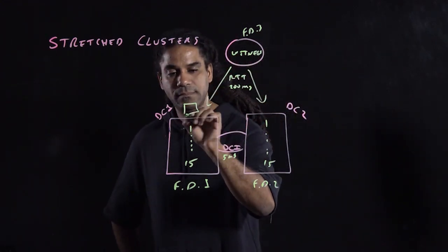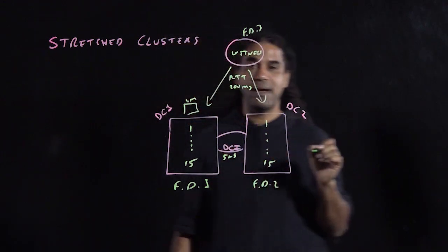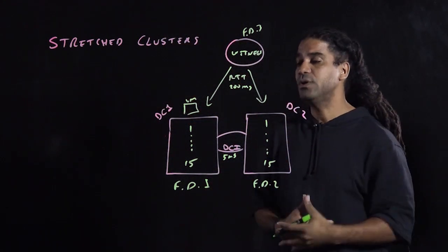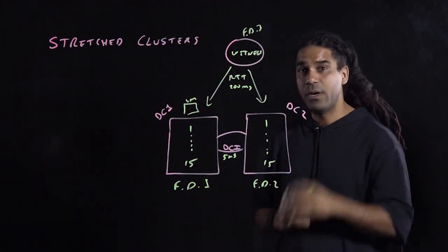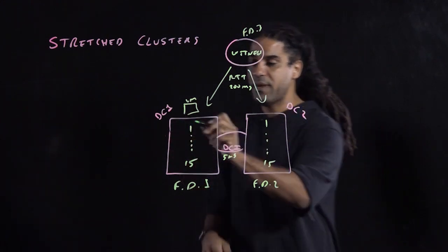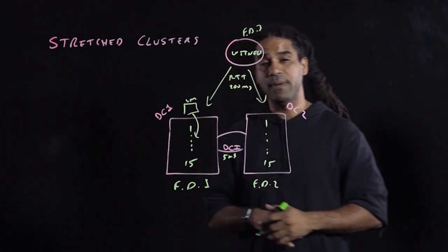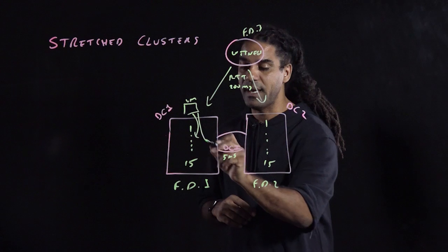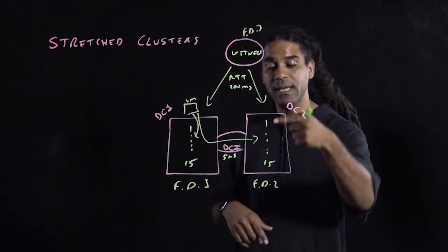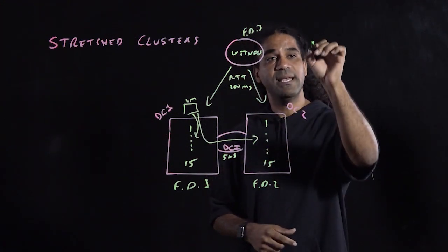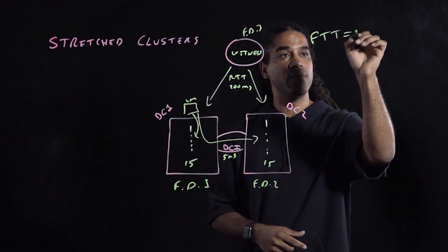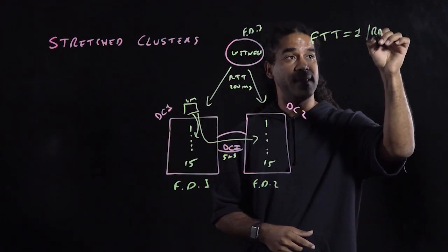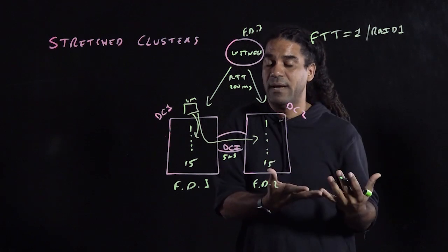And the VM, here it is, is going to have an FTT policy of failures to tolerate of one, with a RAID of one, which means one copy of the objects for the VM will be copied locally, the other copy will be across the data center interconnect to the other location. So that's an FTT of one, with a RAID, a method of one. That's what we have.